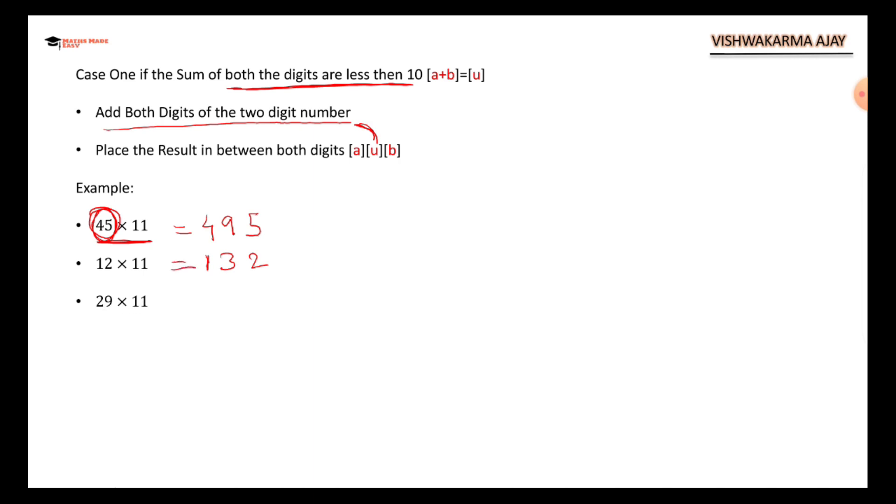29 times 11. 2 plus 9 is 11. I put this in the end so that you know the necessity of case 2. 2 plus 9 is 11, which is more than 10. What will you do in this case?